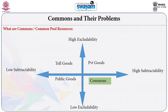Commons are a kind of resource where exclusion is difficult — you can't exclude others from sharing the resource. And once joint use begins, the total availability of the resource gets subtracted. When more and more people share a particular resource, each individual's extraction gets reduced or limited. Let us take some examples to understand what commons and common pool resources are.